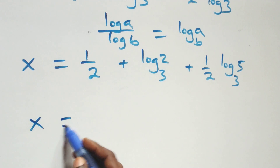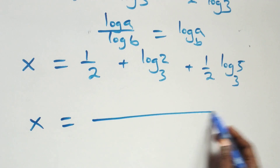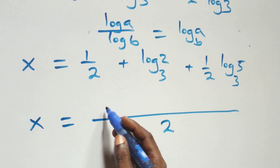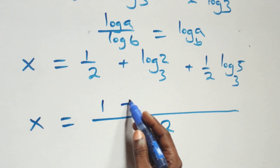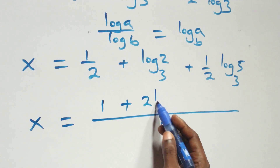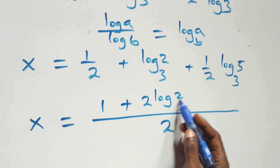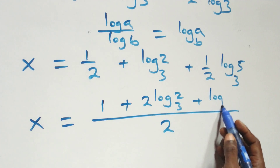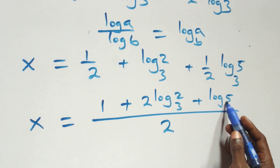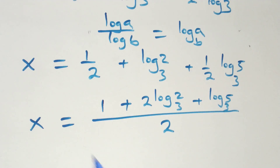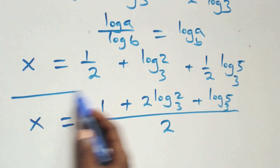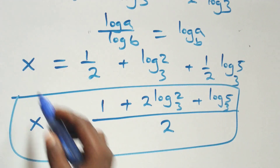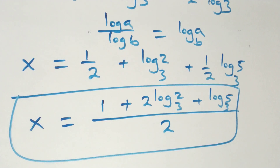We bring this together as one fraction. The common denominator is 2, giving x equals 1 plus 2 log 2 base 3 plus log 5 base 3, all over 2. That is the value of x.